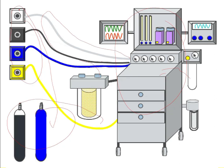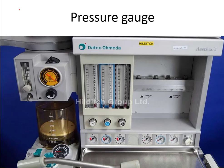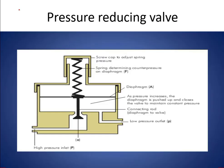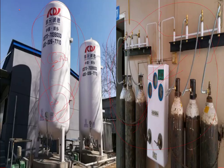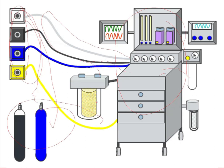From the pipelines, which descend from the roof or the wall of the operation room, the gas moves at a certain pressure to the anesthesia machine, and from the anesthesia machine to the patient's lungs.